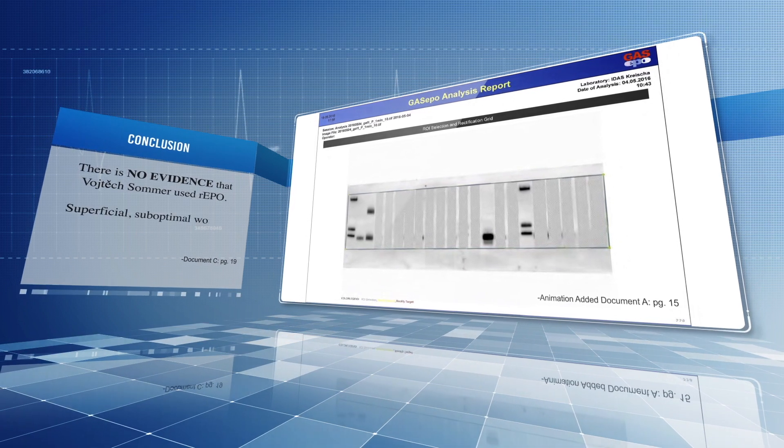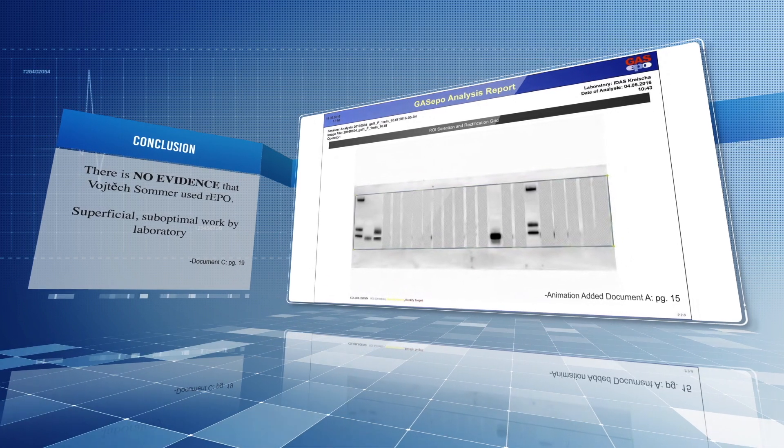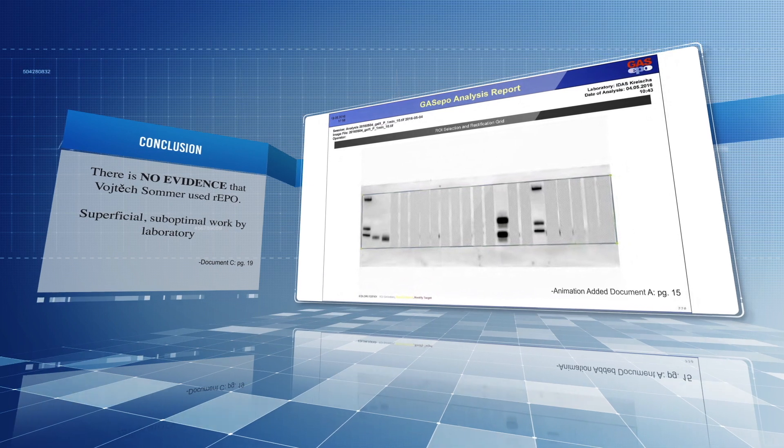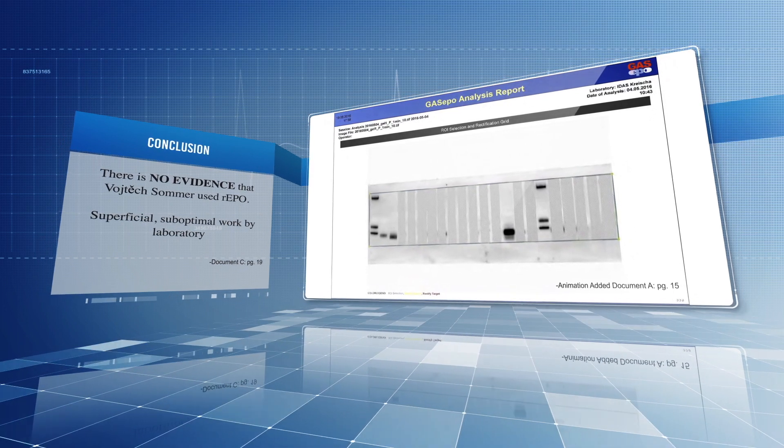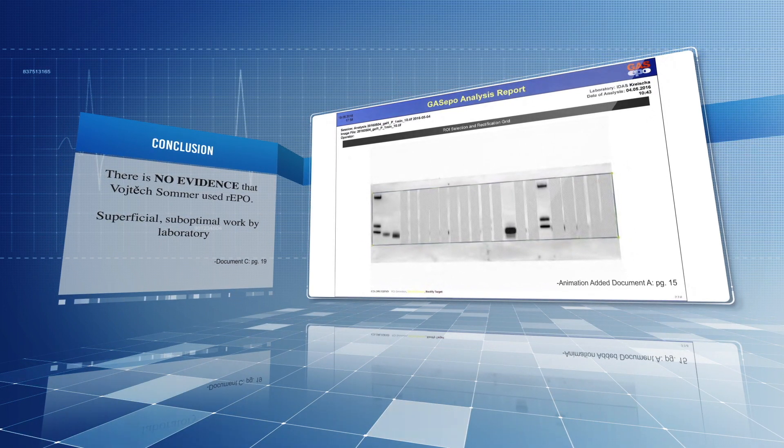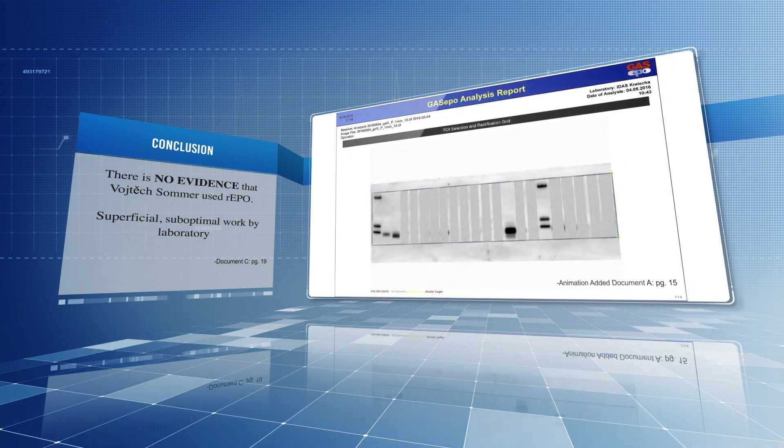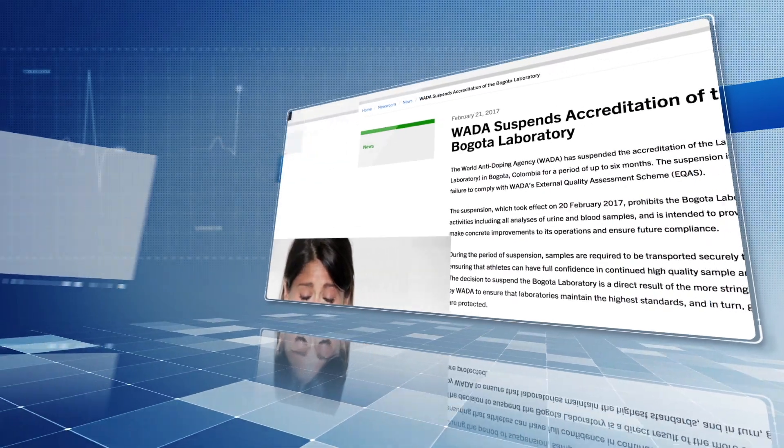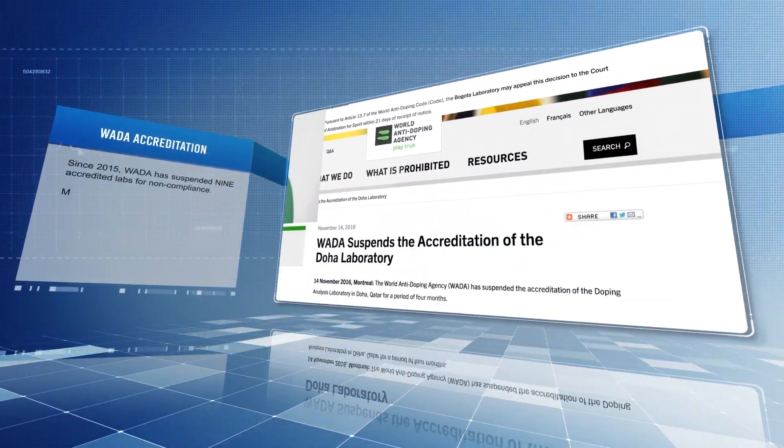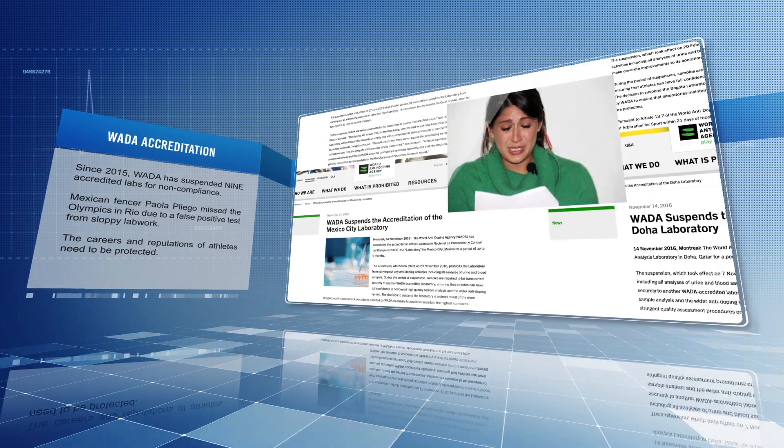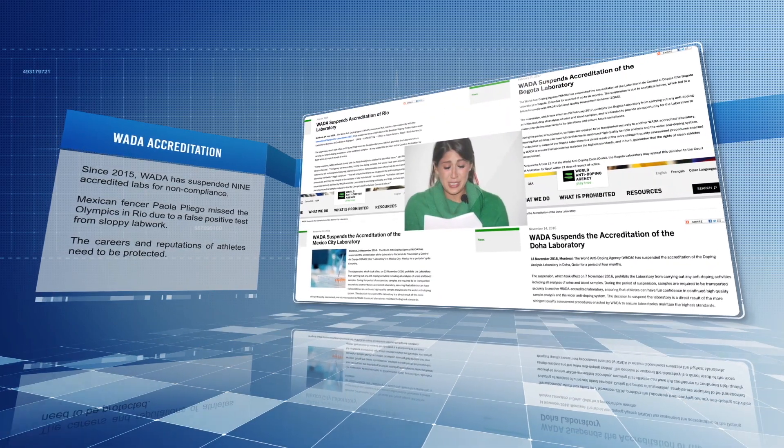From these results, there is no evidence that Vojtech Sommer used R-EPO. The laboratory's treatment of the analysis is superficial and illustrated again that all too many WADA-accredited laboratories produce suboptimal work that falls short of quality standards. Such behavior clearly jeopardizes the rights of athletes.